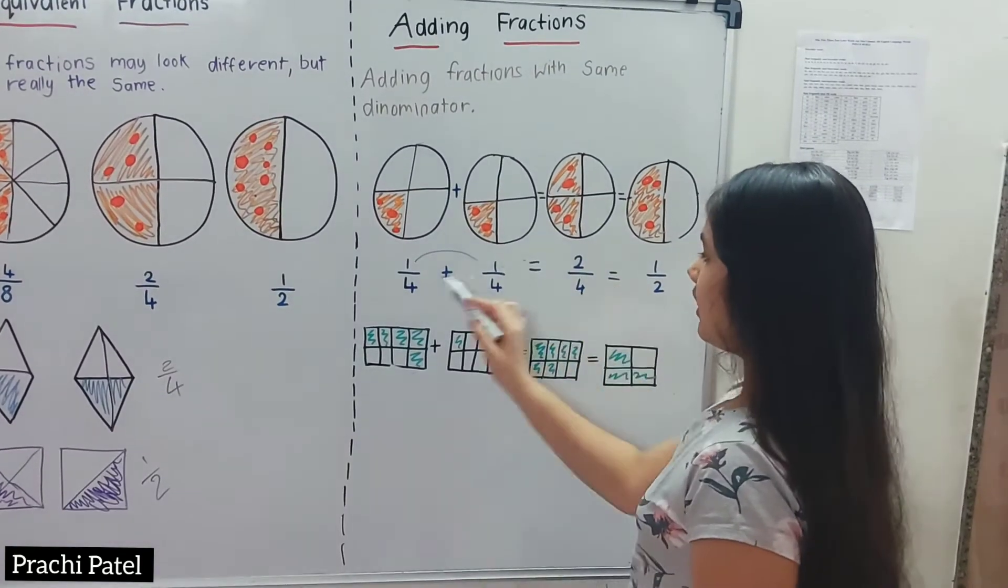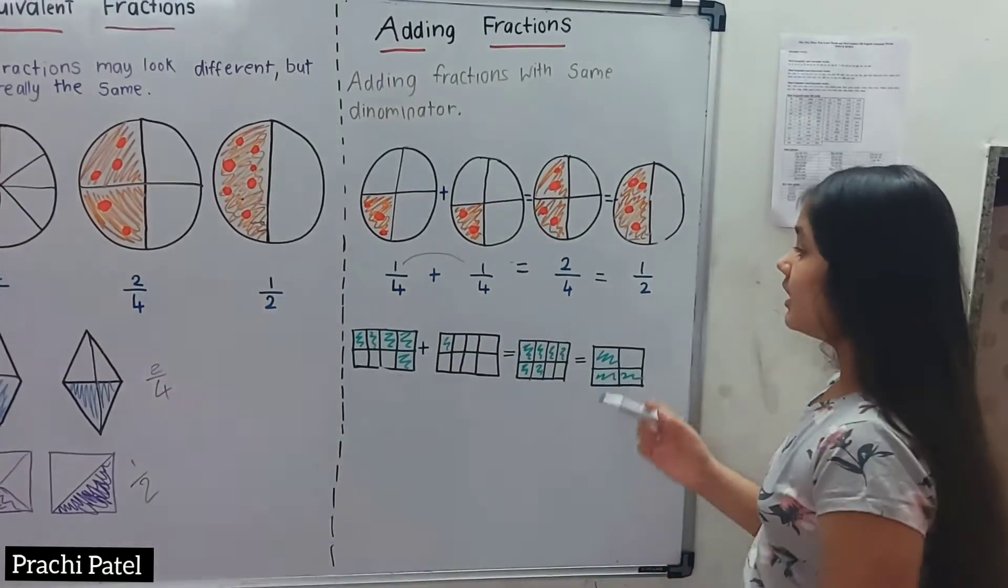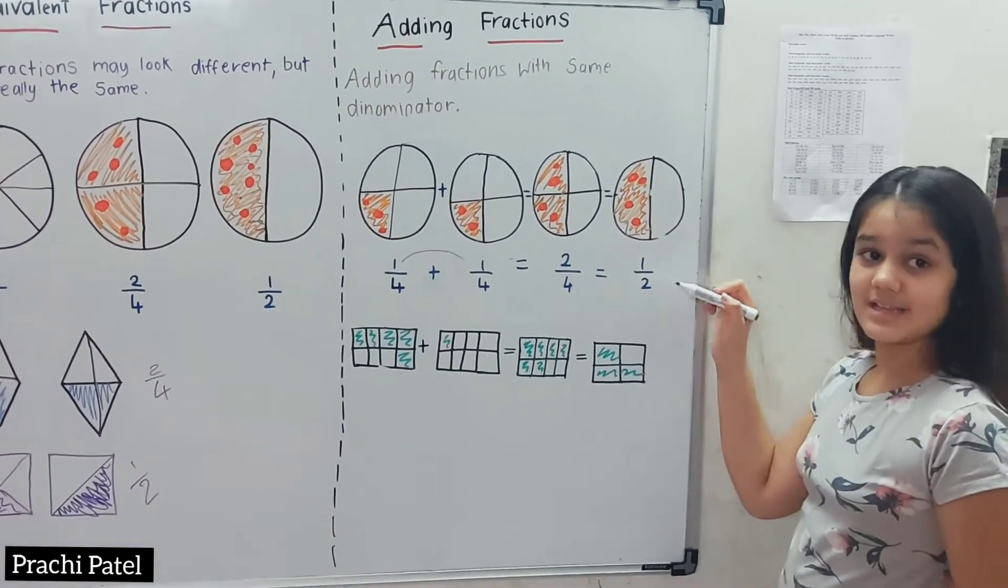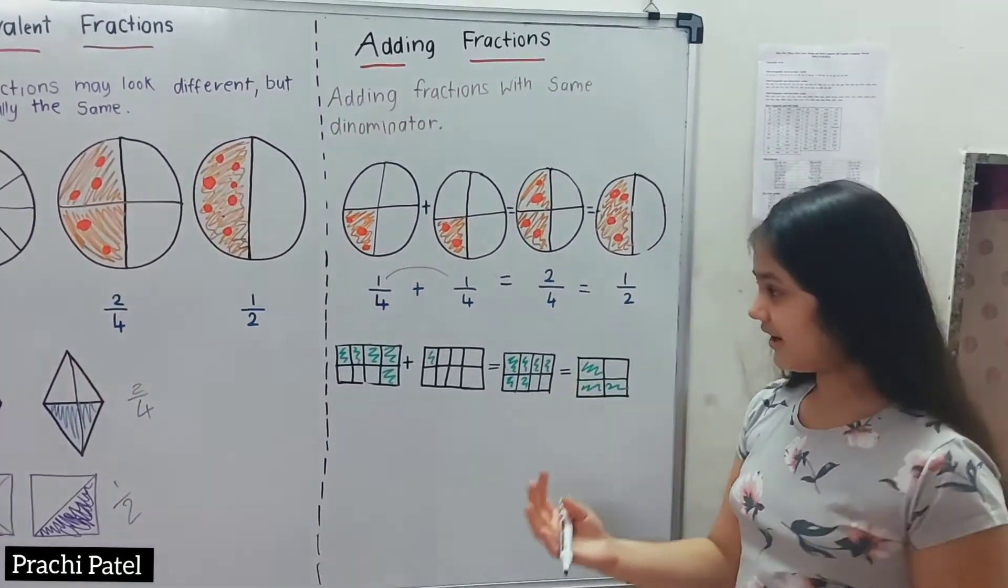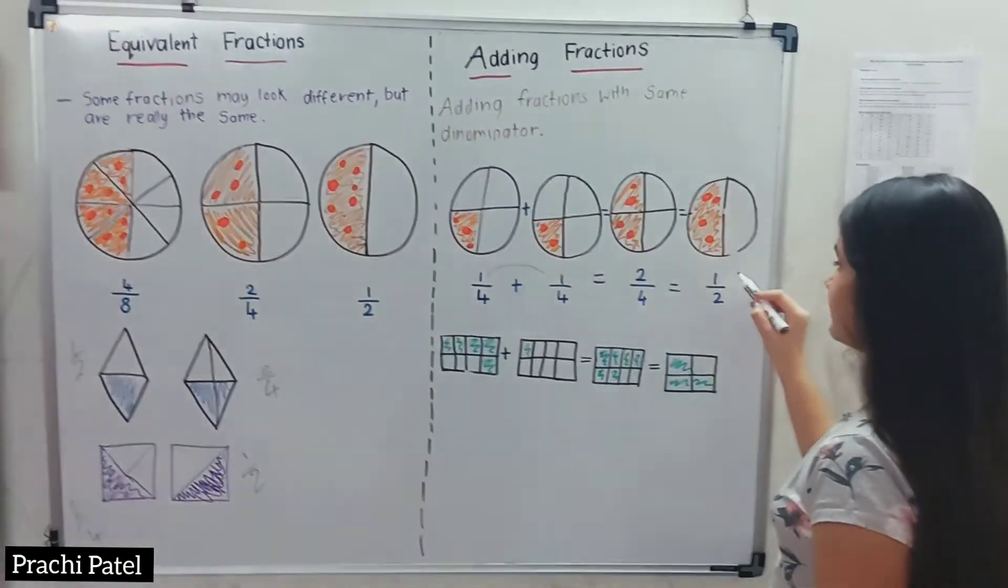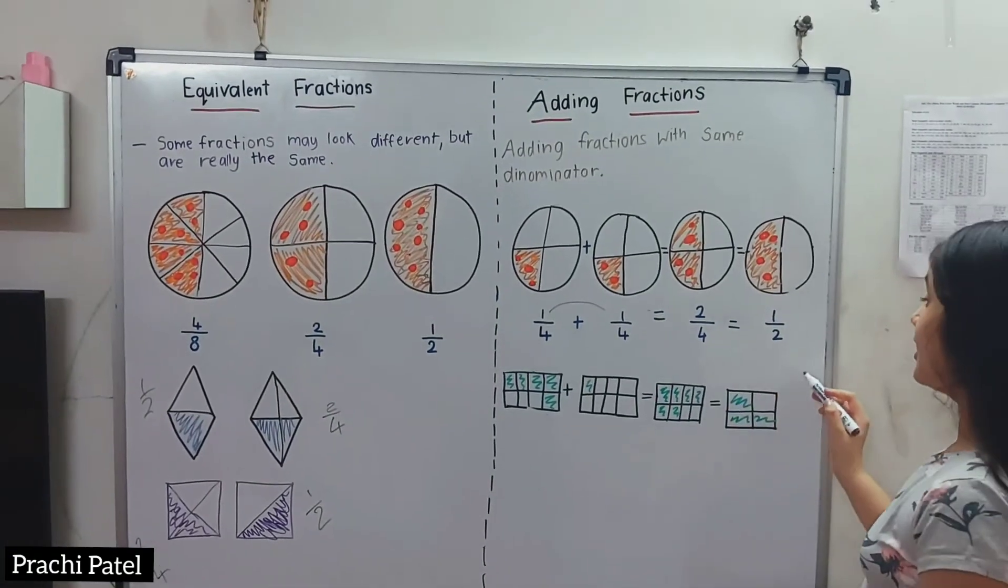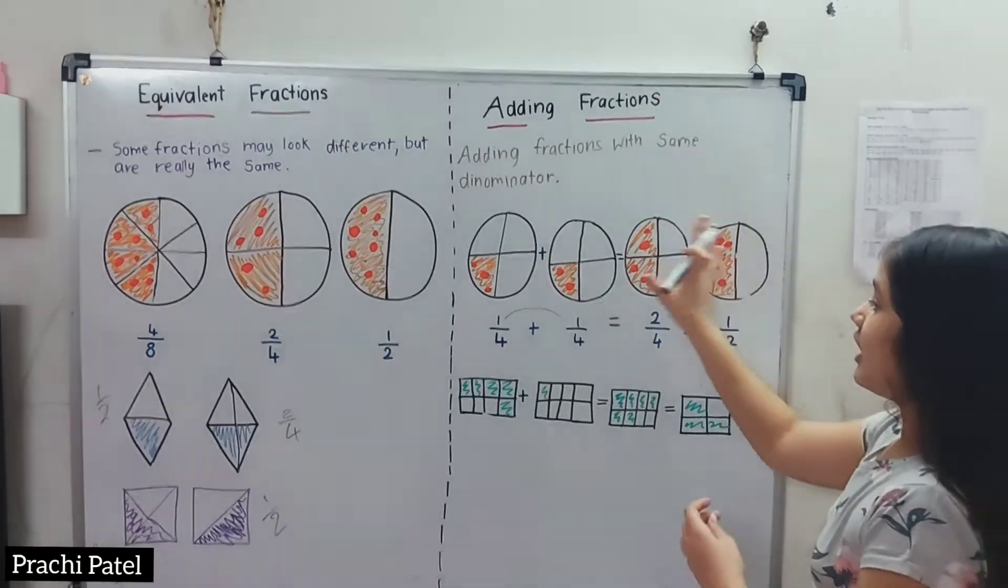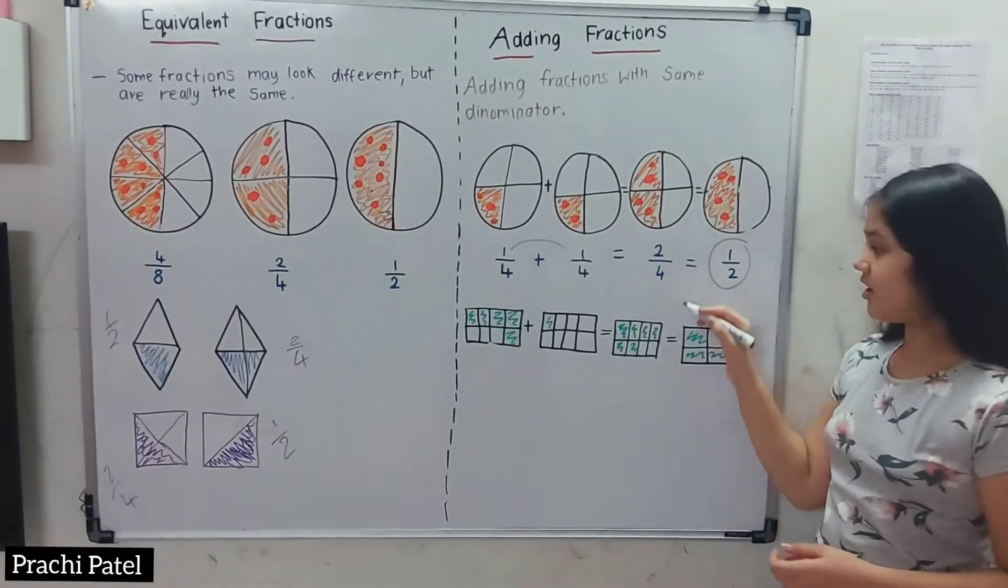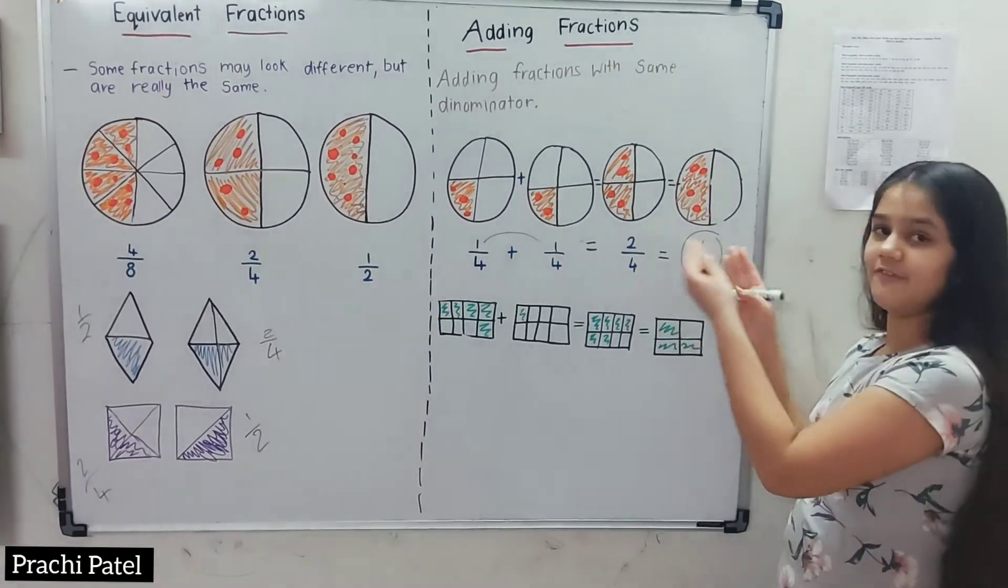The answer will be 2/4 - the denominator stays the same. 1 plus 1 equals 2, and 4 is the same denominator. But we need to simplify the fraction. Half of 2 is 1 and half of 4 is 2, so the simplified answer is 1/2.